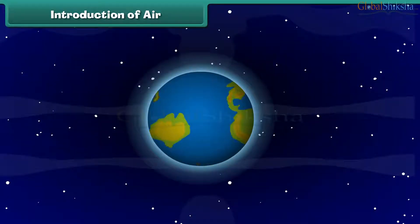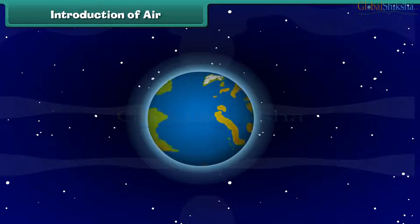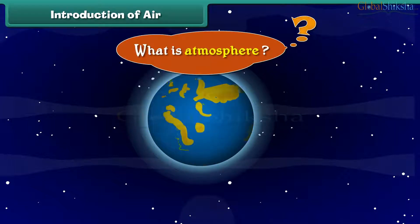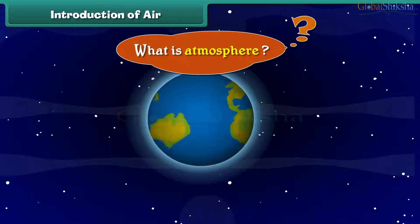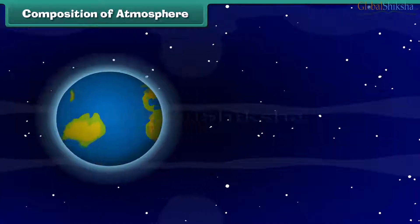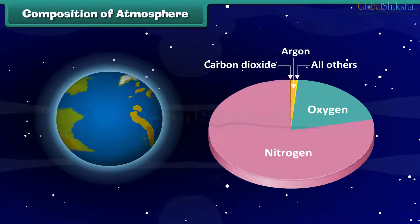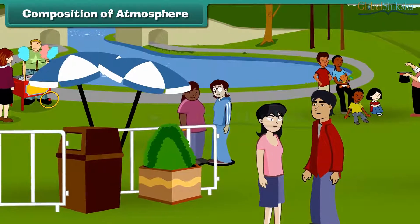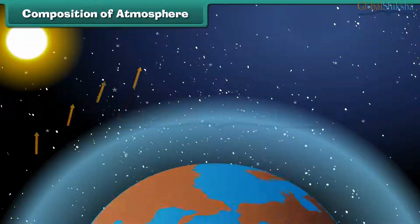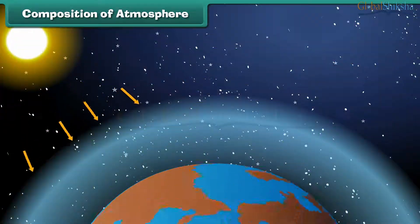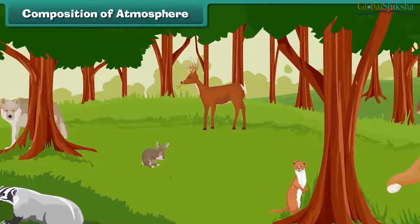Do you know the atmosphere surrounding earth is full of air? But what is this atmosphere? The atmosphere is made up of a mixture of gases, primarily nitrogen and oxygen, that wrap around the earth like a blanket. Without the atmosphere we would not be able to live here. It protects us from the dangerous rays coming from the sun and makes earth a perfect habitat for plants and animals.